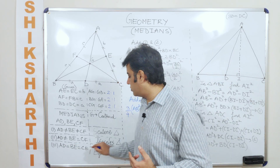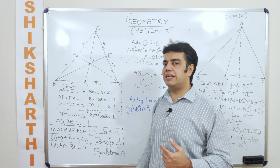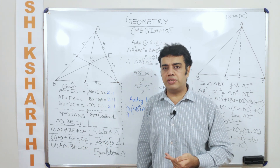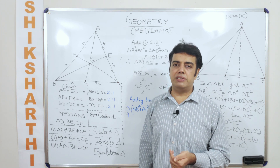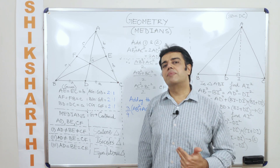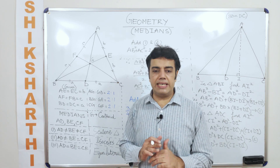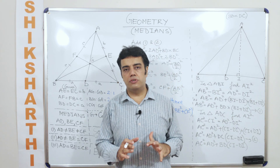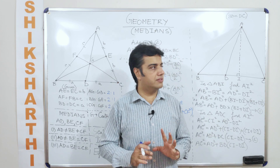Similarly, if I talk about an equilateral triangle, when the three medians are equal, the perpendiculars dropped from the three opposite vertices on the three different sides will also be the same. Taking this discussion forward, the focus now is on how to find out the length of the medians.